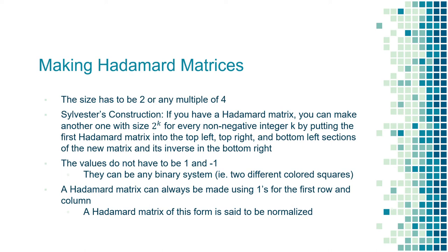The next thing that can help you make Hadamard matrices is Sylvester's construction. You can read exactly what this means on the screen, but the basic premise is that we can create Hadamard matrices by using other Hadamard matrices. The inverse, as you can see on the screen, just means that the values are all flipped. So 1 becomes negative 1 and negative 1 becomes 1. For example, we can make a 4x4 Hadamard matrix by using 4 2x2 Hadamard matrices, or an 8x8 Hadamard matrix by using 4 4x4 Hadamard matrices.